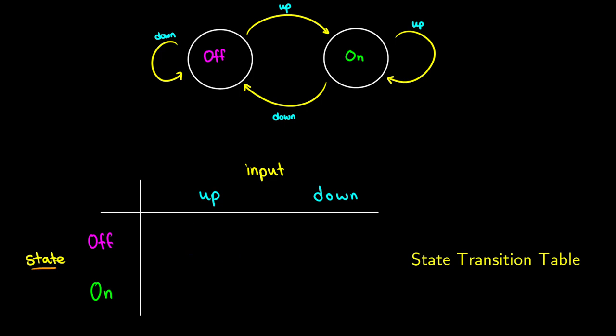If it is off and we turn it up, it changes to the on state. If it starts on and we turn it up, it stays in the on state. But if we start in the off state and we turn it down, it stays off. And if we start in the on state and we give it a down input, then it turns itself off. So this state transition table tells us what happens depending on which state we start in and what input we give it — it gives us a new output.